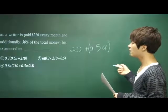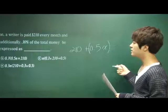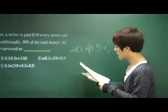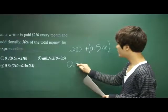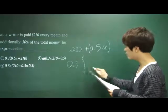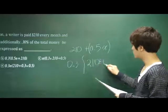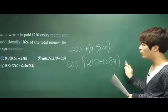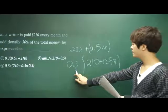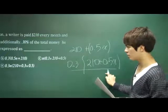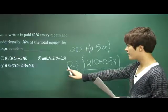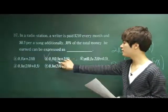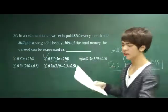This is his total salary. The question is asking: 30% of the total money he earned can be expressed as. So it is 0.3 times the total he earns, which is 210 + 0.5x. If you look for this kind of equation among the answer choices, the correct answer is B — 30% times his total income. Answer choice B is correct.